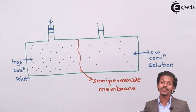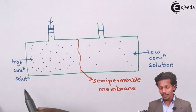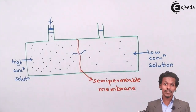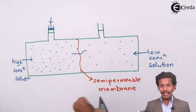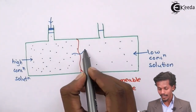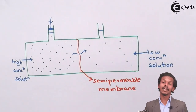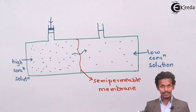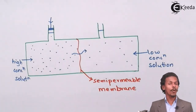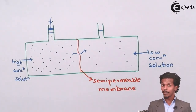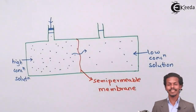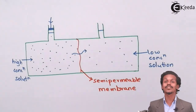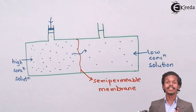By applying excess pressure, the solvent which was flowing from right to left is now stopped, or even reversed to flow from left to right. We are preventing the solvent from moving from the lower concentration to the high concentration side, and the pressure required to do this is known as osmotic pressure.